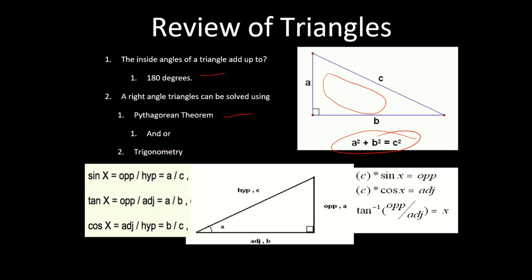We've also got trigonometry, which you've done in grade 10 math. Sine of X is equal to opposite over hypotenuse, cosine, tangent — this is what we're going to be using. You're going to put these on your formula sheet; you're not going to memorize them. We're not interested in memorization — you simply learn how to apply them.